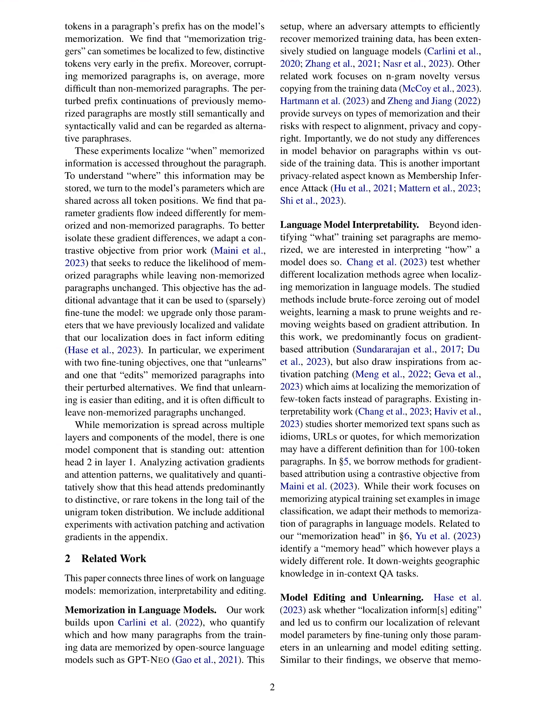The key difference between the contrastive objective and traditional fine-tuning objectives is that the contrastive objective focuses on altering the memorized content while keeping the non-memorized content unchanged, thus providing a more targeted approach to modifying the model's behavior specifically related to memorization. Traditional fine-tuning objectives typically aim to optimize the model's performance on a general task, without specifically targeting memorized information or making a clear distinction between memorized and non-memorized data.